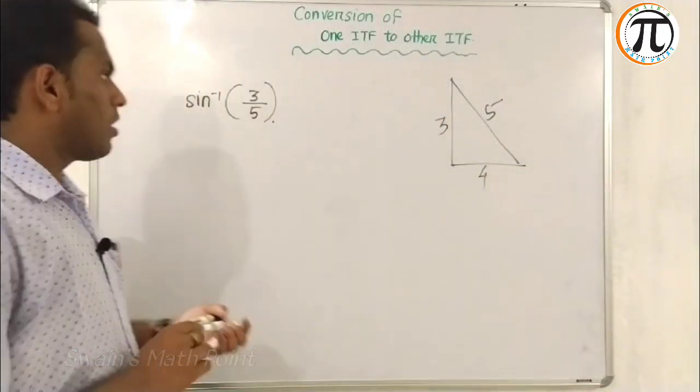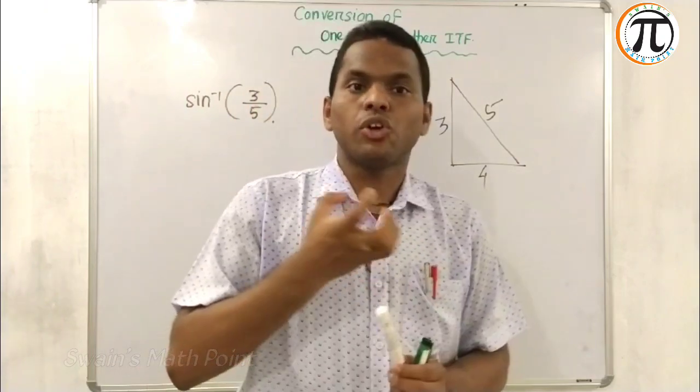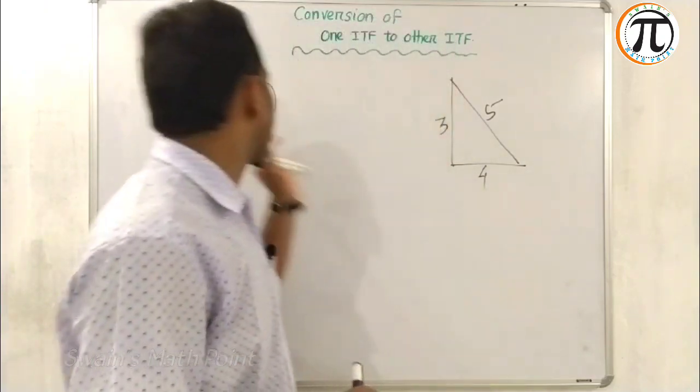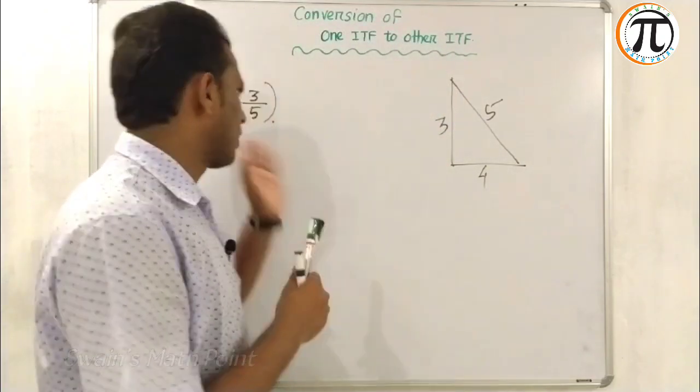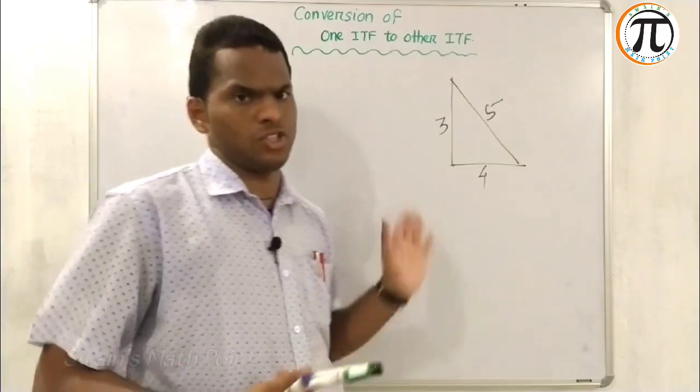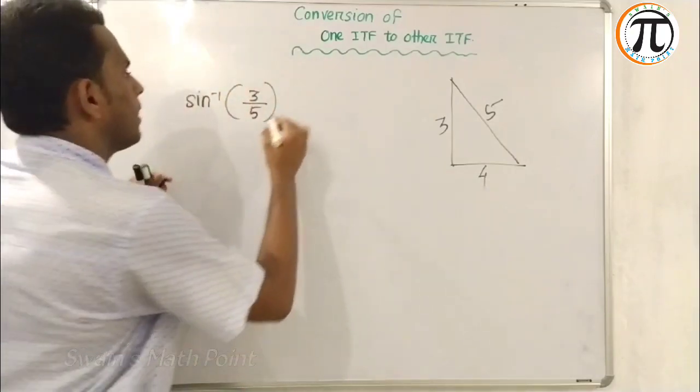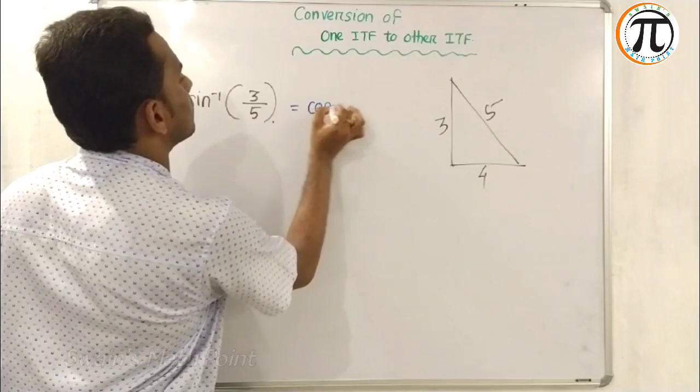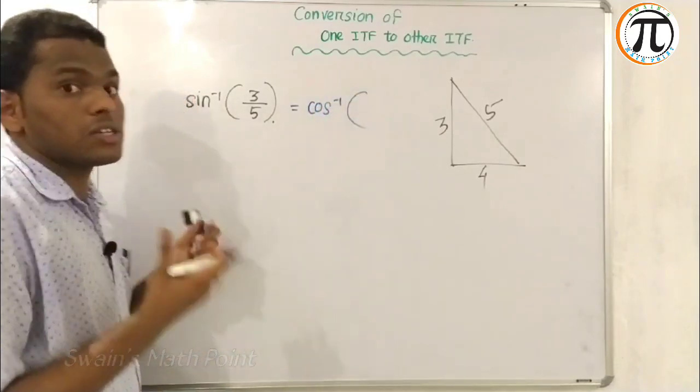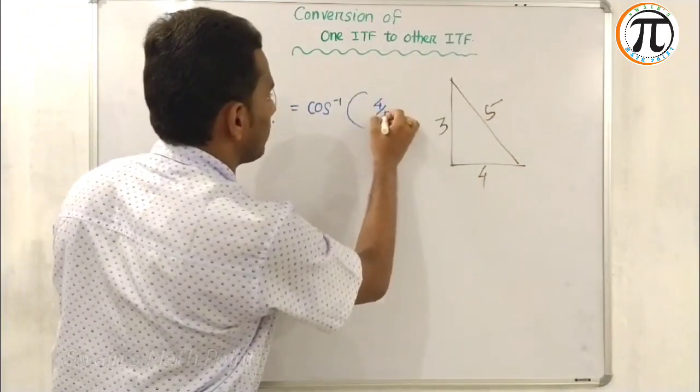Now try to convert. Whatever you need, convert to that. If we need cosine, convert sine to cosine. First convert to cosine. It will be cosine inverse of what? Cosine is B by H, which is 4 by 5.